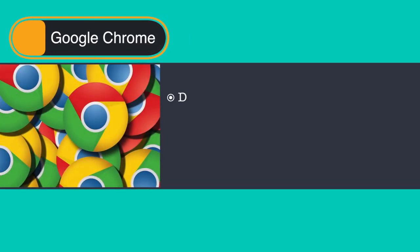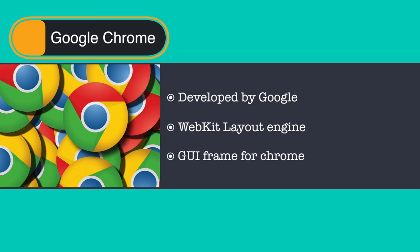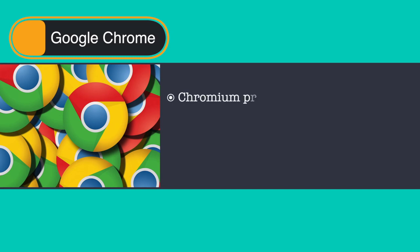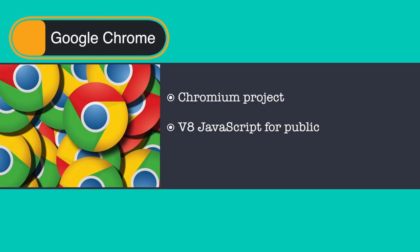The next web browser is Google Chrome, developed by Google, which uses the WebKit layout engine. The name comes from the graphical user interface frame — or chrome — of web browsers. There is also an open source project called Chromium, developed by Google, which makes part of Chrome's source code including its V8 JavaScript engine available to the public. Chromium implements the same feature set as Chrome but lacks built-in automatic updates and Google branding, and has a blue colored logo in place of the multi-colored Google logo.